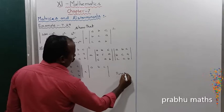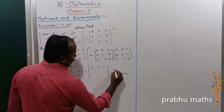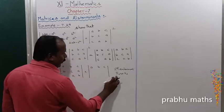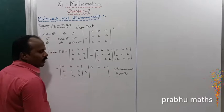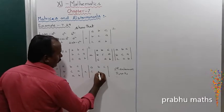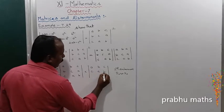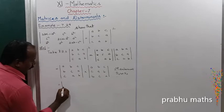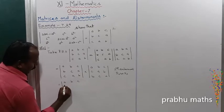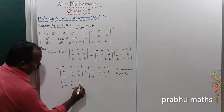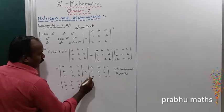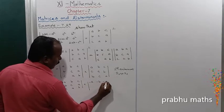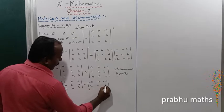For the second determinant, R2 is interchanged with R3. Then R1 is interchanged with R2. So the resulting second matrix becomes [c,a,b; b,c,a; c,a,b], with the first row multiplied by minus one, giving minus a, minus b, minus c.